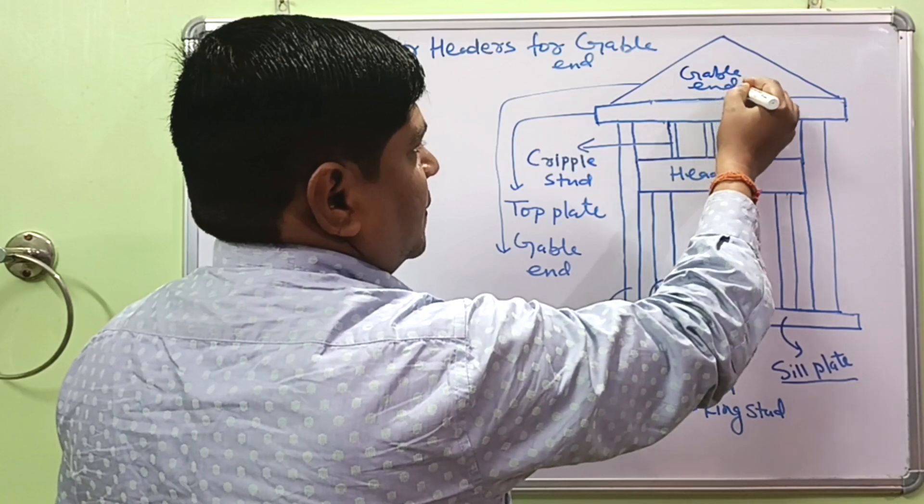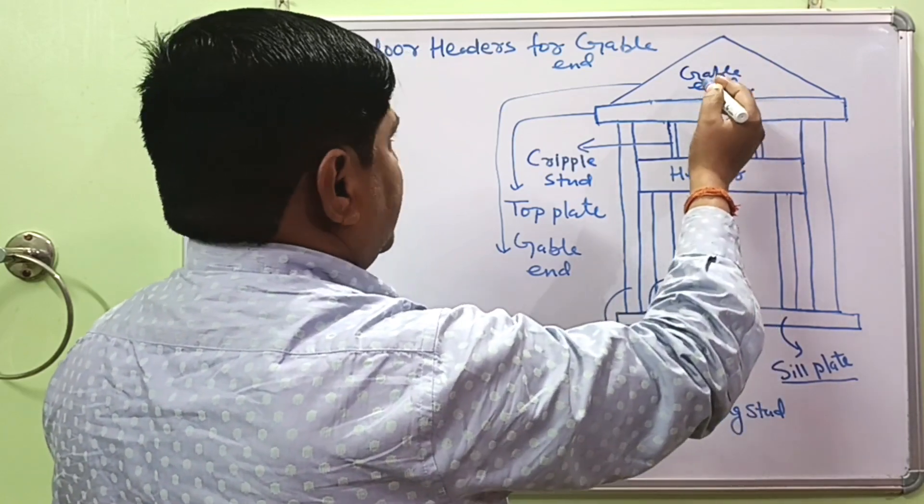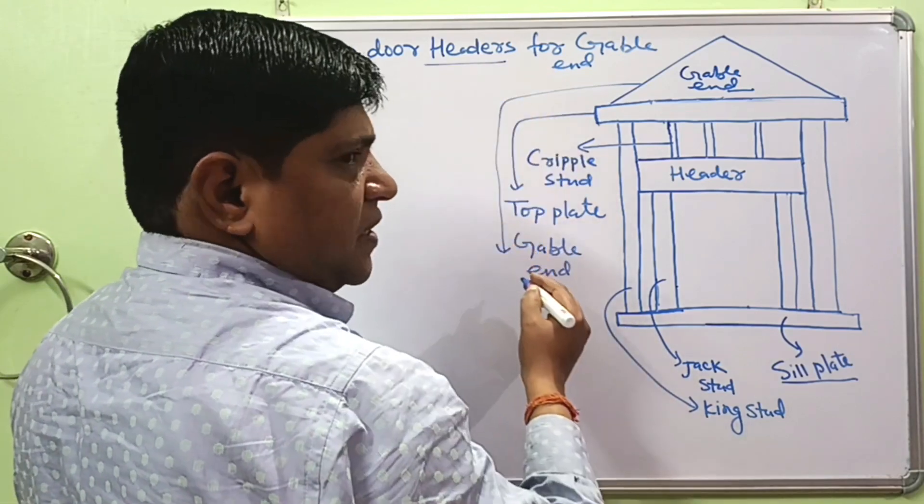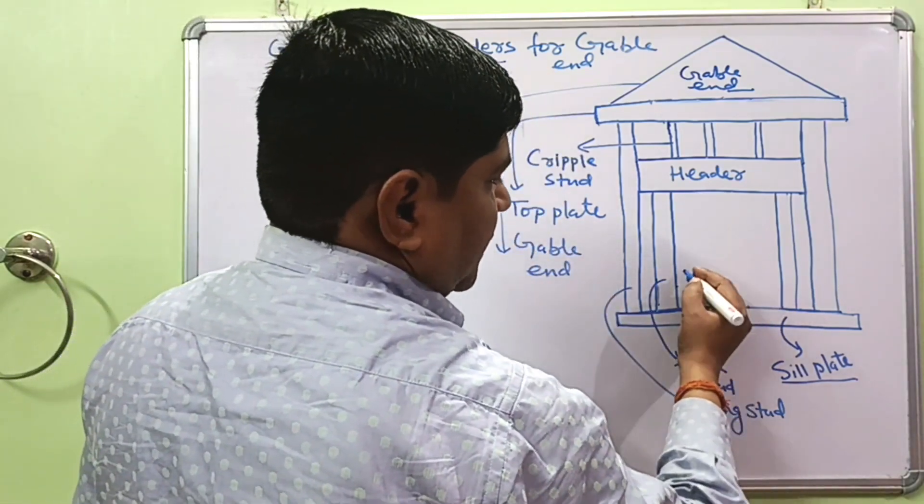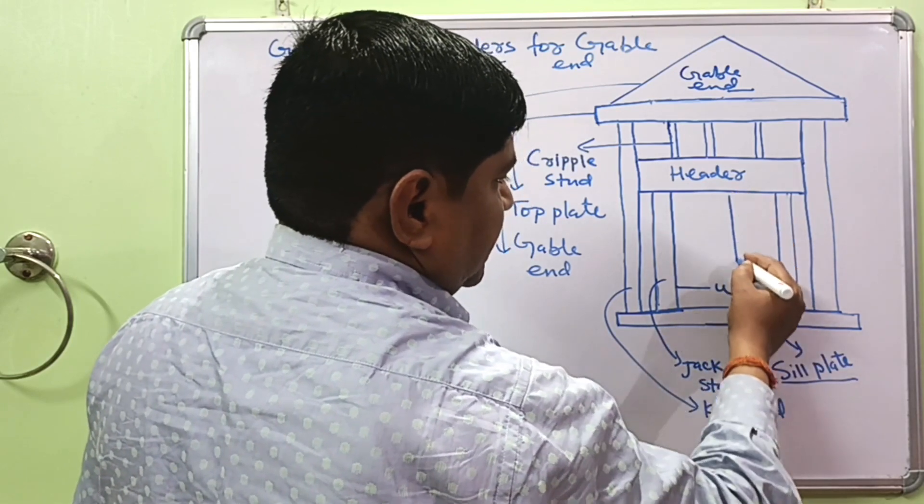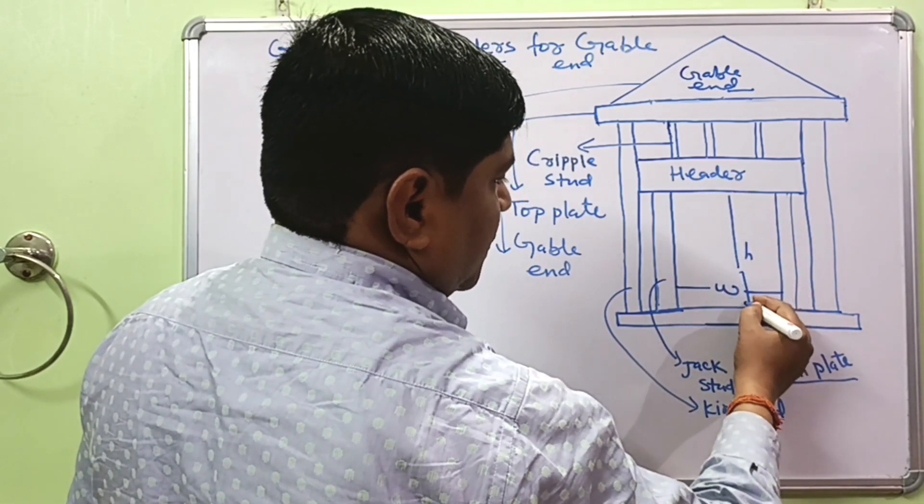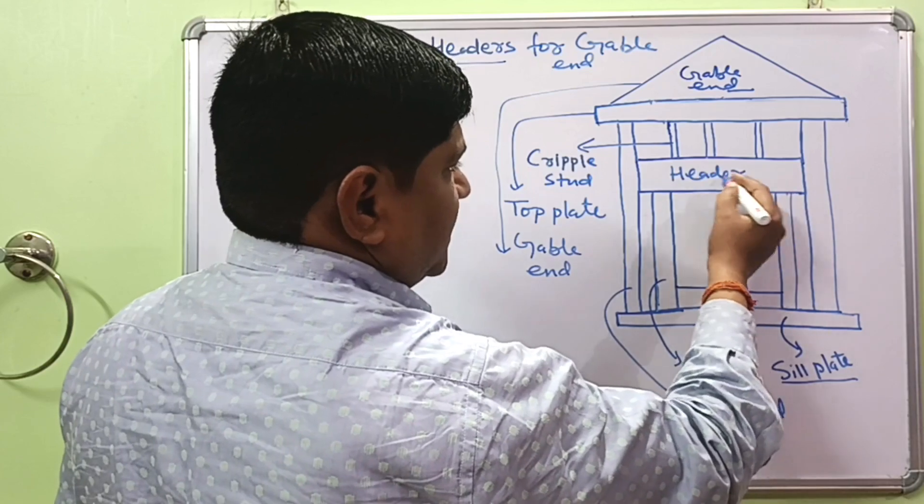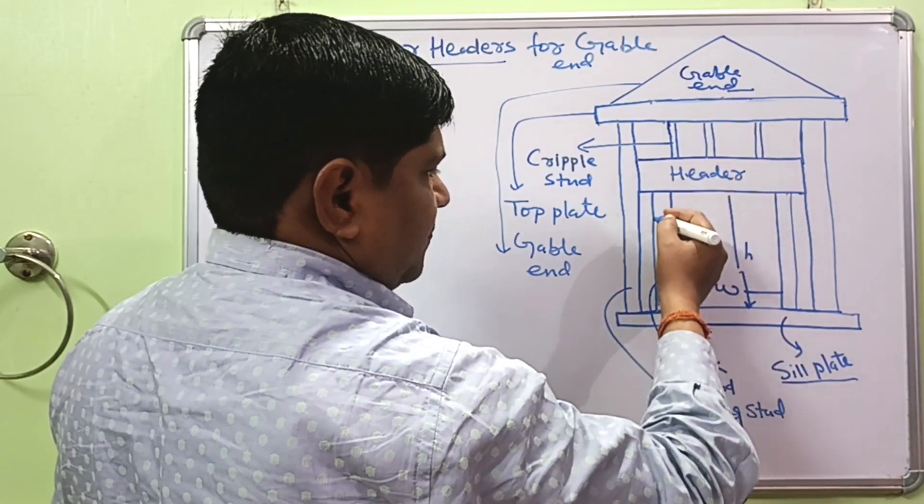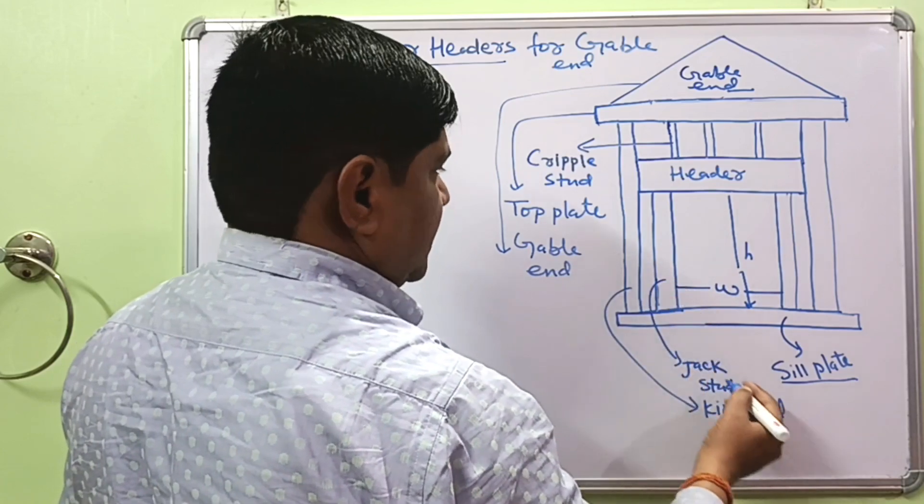If your garage has gable-end, how can you decide the correct header size required for the opening? This is opening width. And this one is opening height of your garage. And what is the function of this header? Headers collect the load above it and transfer to adjacent studs.